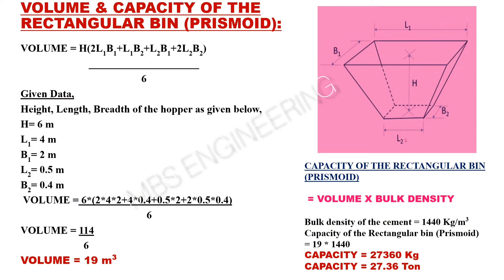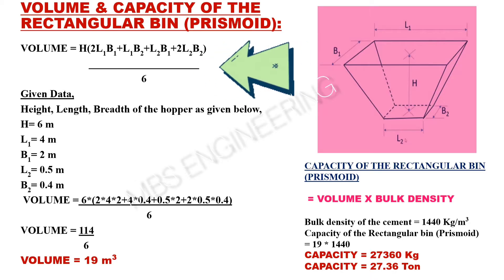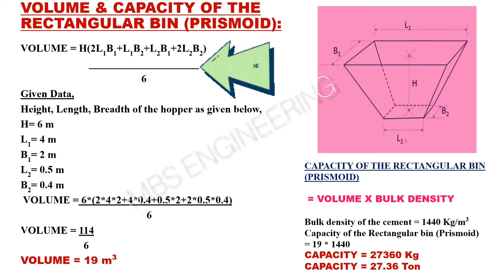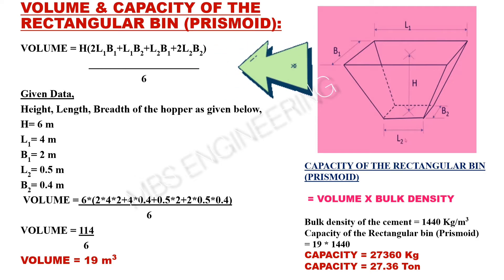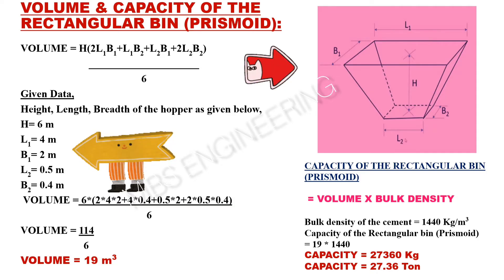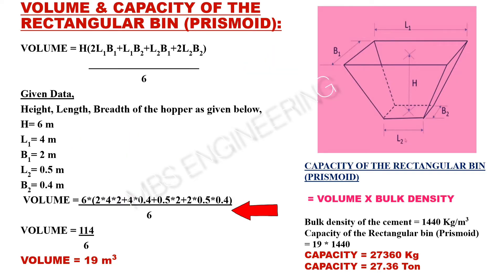We learn about how to calculate the volume and capacity of the rectangular bin or prismoid. The volume calculation formula for a rectangular bin or prism is: H multiplied by (2L1B1 + L1B2 + L2B1 + 2L2B2), divided by 6. Please refer to the prismoid snaps and the given data. H is 6 meters, L1 is 4 meters, B1 is 2 meters, L2 is 0.5 meters, B2 is 0.4 meters. Based on the above equation and given data, the volume of the rectangular bin or prism is 19 cubic meters.